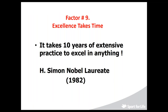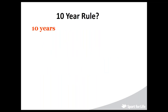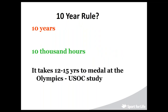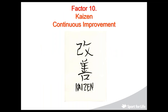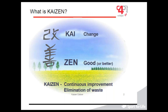It was once said that it takes 10 years of extensive practice to excel in anything. We changed that to 'excellence takes time' because it can be less or more than ten years — the 10-year rule and 10,000 hours. US research tells us it takes 12 to 15 years to medal at the Olympic Games. Kaizen, or continuous improvement, is the continuous improvement and elimination of waste. We published the LTAD document in 2005, the second edition 2.0 in 2013, and are already working on LTAD 3.0 as new information and new discoveries emerge.